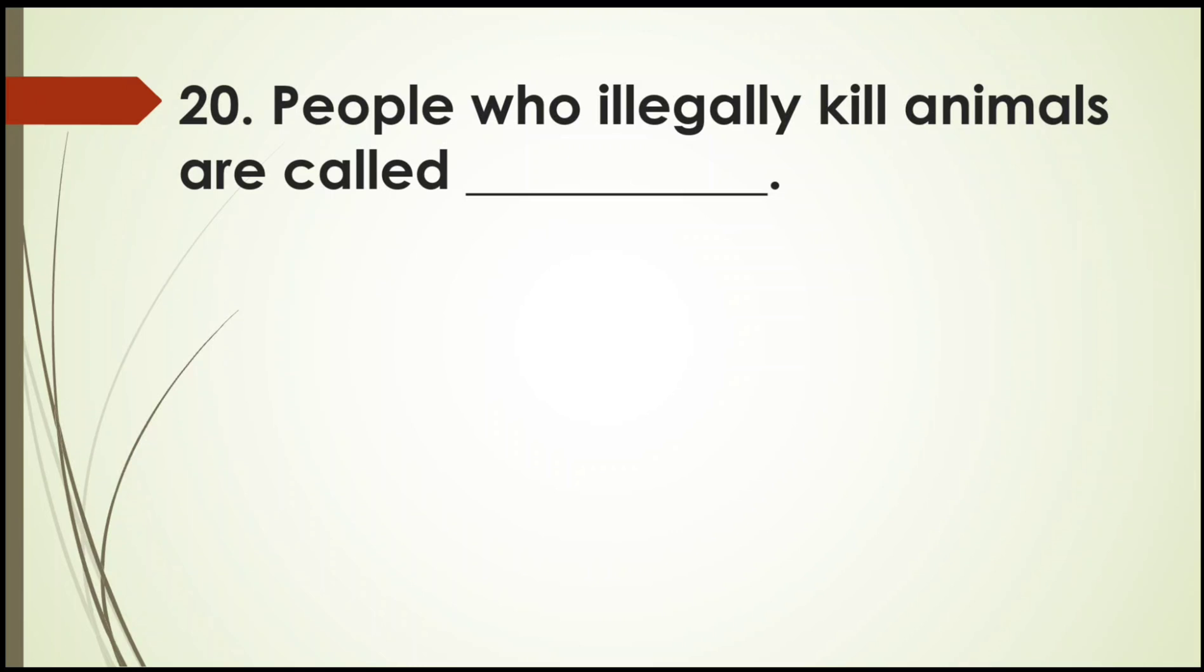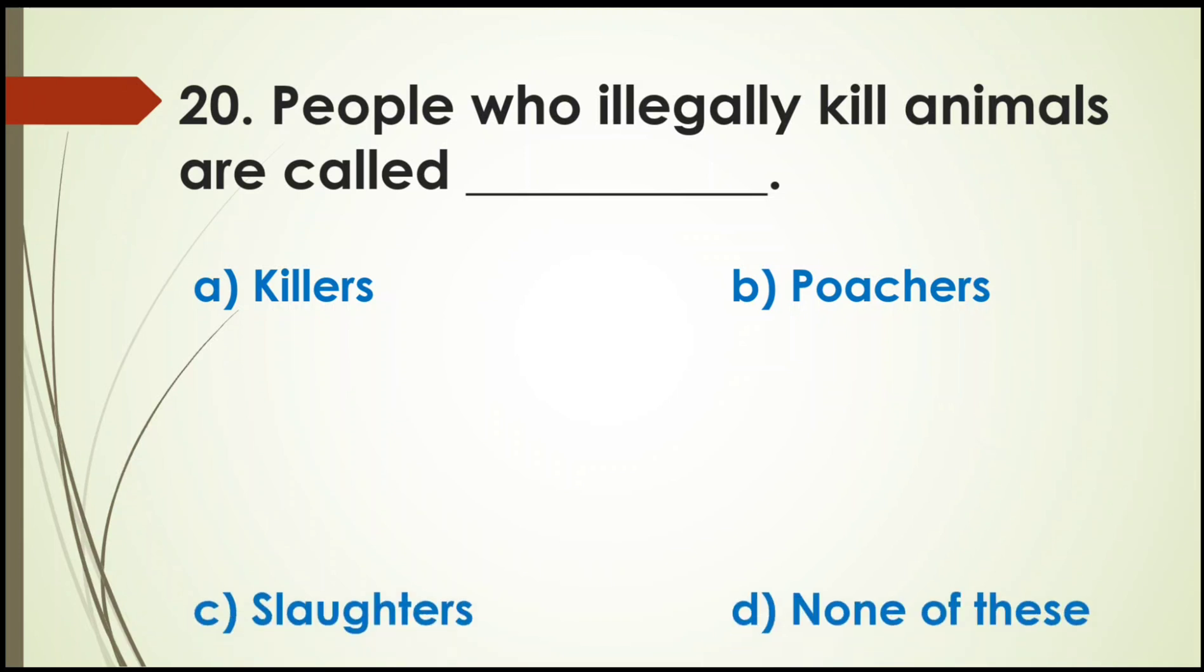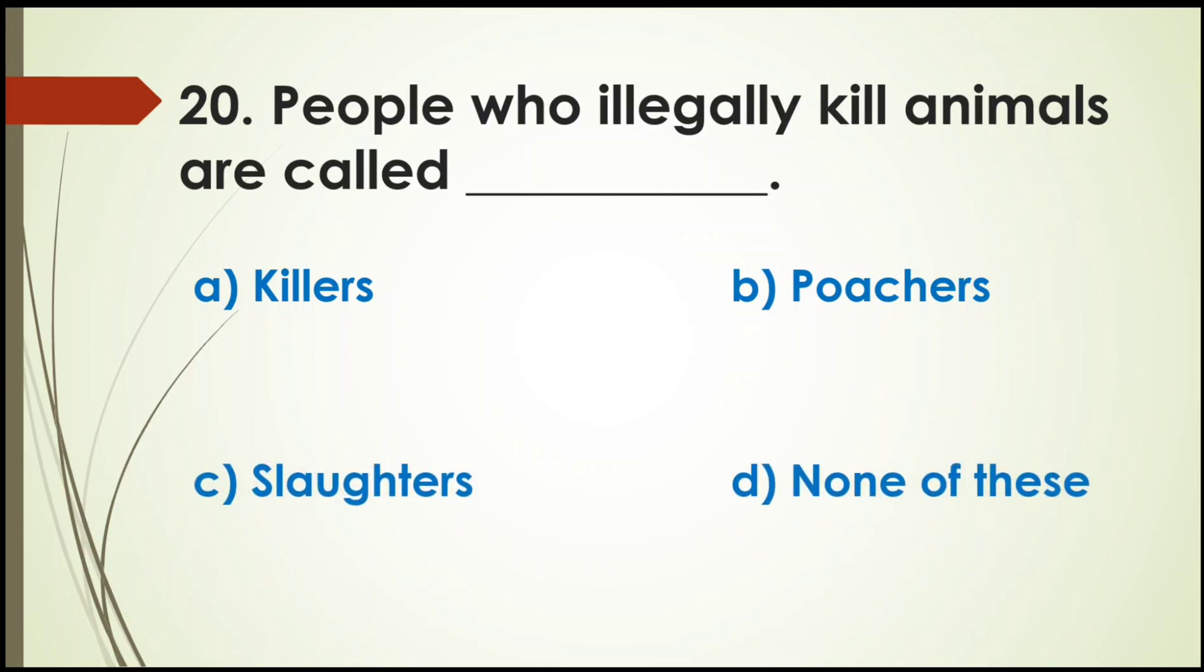And the last question. People who illegally kill animals are called dash. Options: Killers, Poachers, Slaughterers, or none of these? Right answer is poachers. The people who kill animals illegally are called poachers.